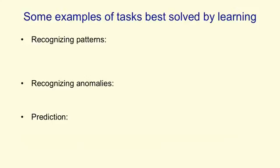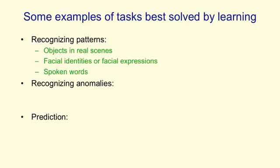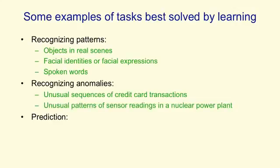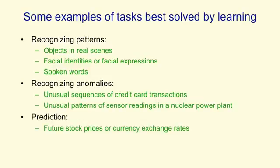Some examples of the things that are best done by using a learning algorithm are recognising patterns — for example, objects in real scenes, or the identities or expressions of people's faces, or spoken words. There's also recognising anomalies: an unusual sequence of credit card transactions, or an unusual pattern of sensor readings in a nuclear power plant. You'd really like to recognise that something funny is happening without any supervision signal — it's just not behaving in its normal way. And then there's prediction: typically predicting future stock prices or currency exchange rates, or predicting which movies a person will like from knowing which other movies they and other people liked.